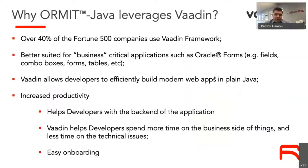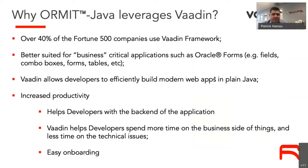We thought it important to show why ORMit Java specifically leverages Vaadin. First, it's used by over 40% of Fortune 500 companies — it's very popular with many big names. The beauty of Vaadin is that it's best suited for business-critical applications: it already has built-in concepts like fields, combo boxes, tables, and blocks — all concepts that exist in Forms — which is one of the main reasons Vaadin was chosen.